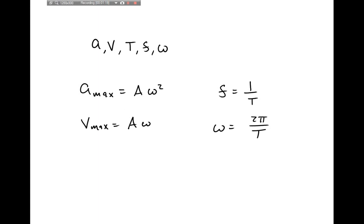These equations always hold. Now the only types of equations that don't always hold in general are the equations that relate the angular frequency to the variables describing the actual system. So for example, for the spring, we have that omega is equal to the square root of k divided by m. This is only true for a mass attached to a spring. For something like a simple pendulum, we can't use this formula anymore because we don't even have a spring, so we don't have a value for the spring constant.